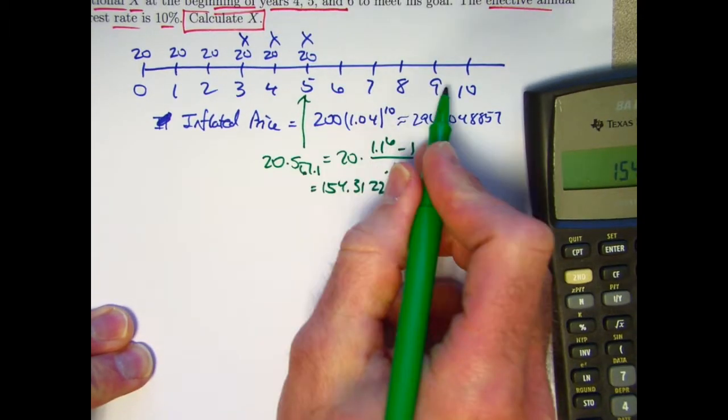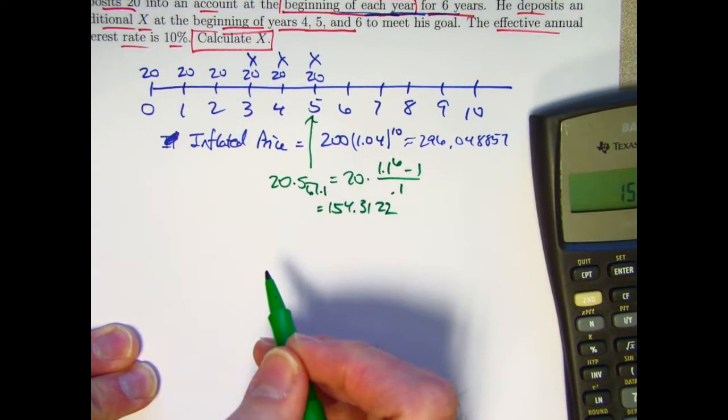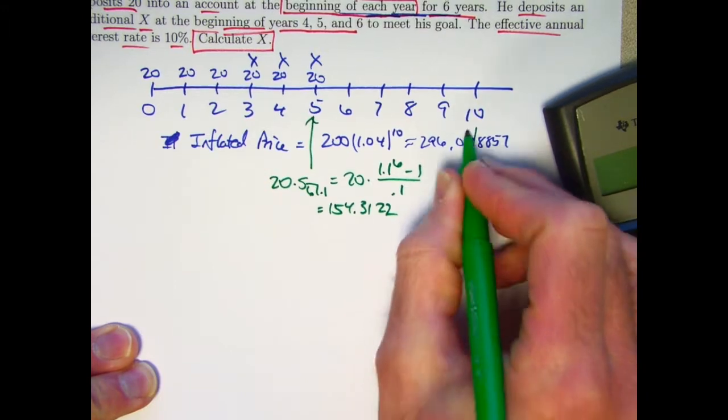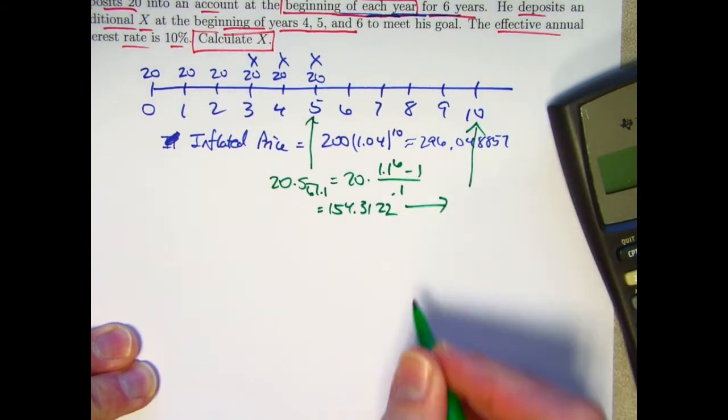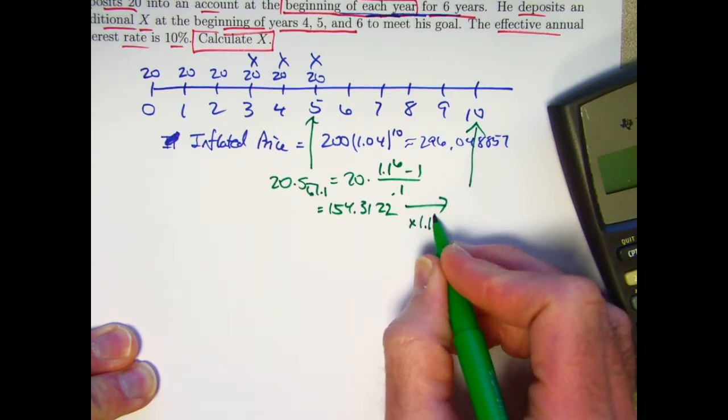That's going to need to get pushed forward in time another five years, according to the 10% interest rate. So this time, let's go ahead and do that right away. So I'm going to multiply that by 1.1 to the 5th power.